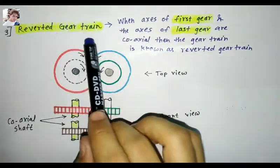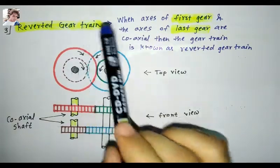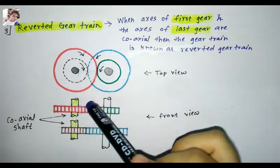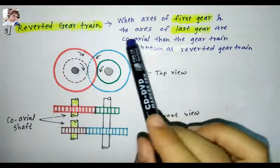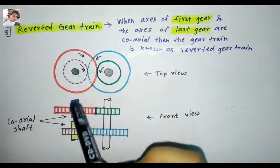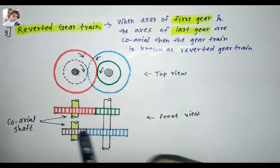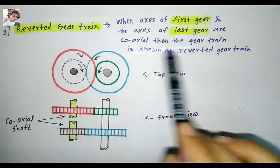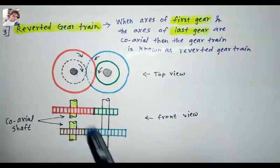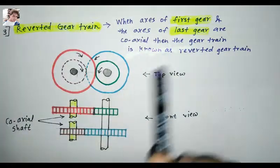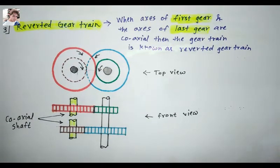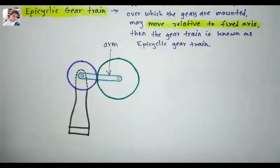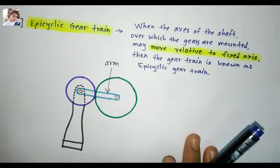The third type is a reverted gear train. This is the arrangement when the axis of the first gear and the axis of the last gear are coaxial. When the axis of the first gear and the axis of the last gear are coaxial, then the gear train is known as a reverted gear train.